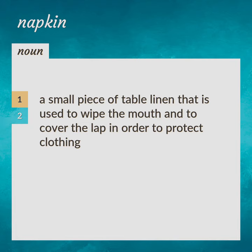Meaning of Napkin. A small piece of table linen that is used to wipe the mouth and to cover the lap in order to protect clothing. Serviette, Table Napkin.